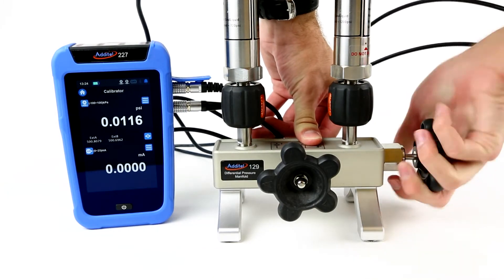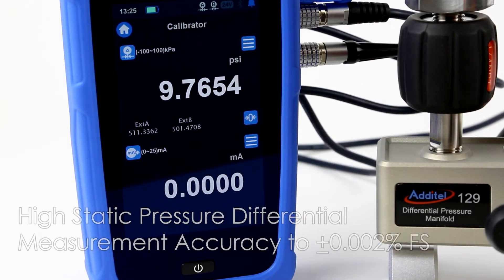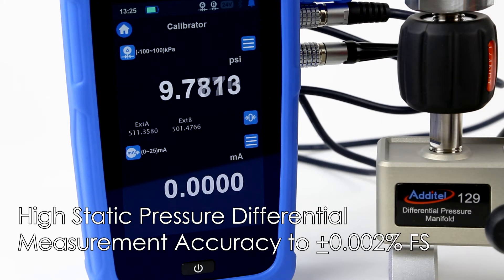The Additel 227 and 226 Documenting Multi-Function Process Calibrator Series provides the ability and method to achieve high static pressure differential measurement accuracies up to 0.002% full span.